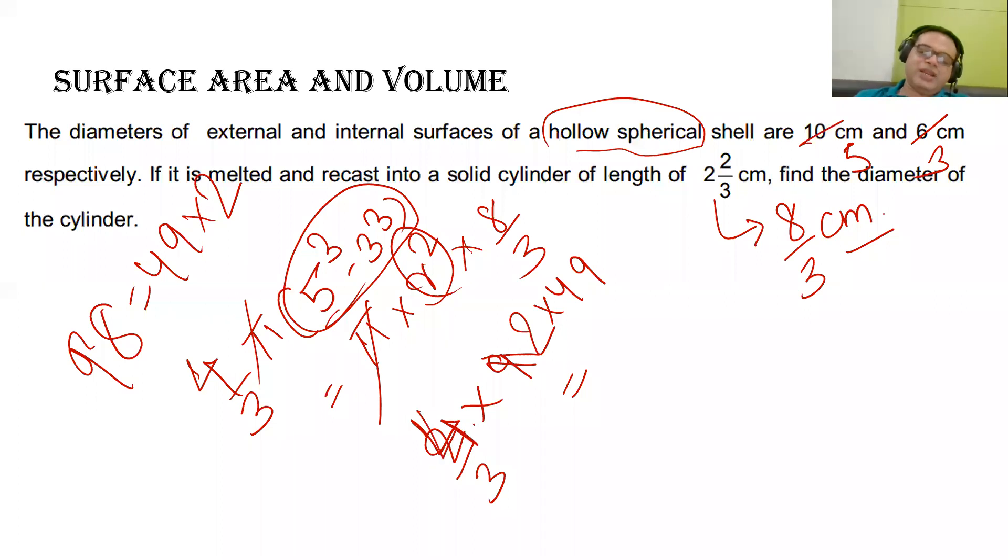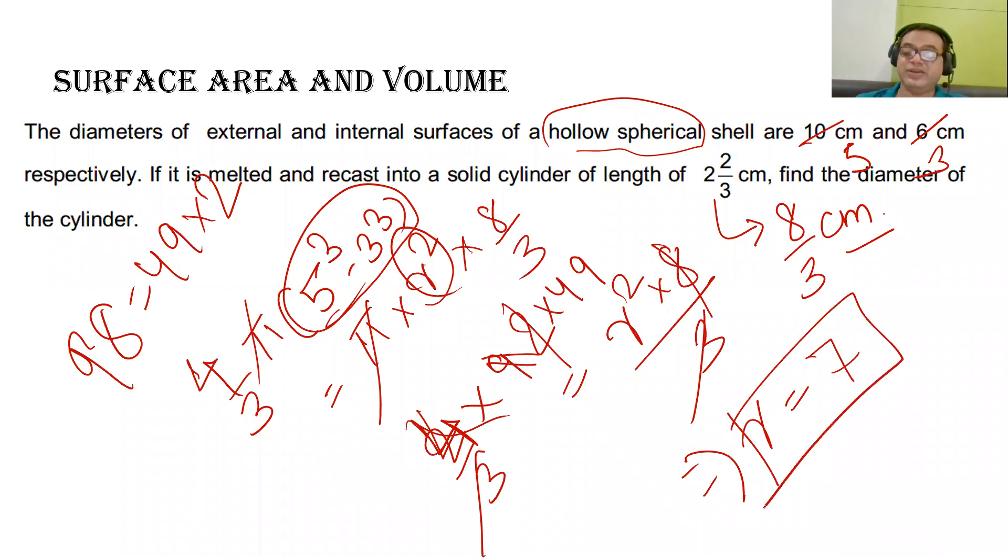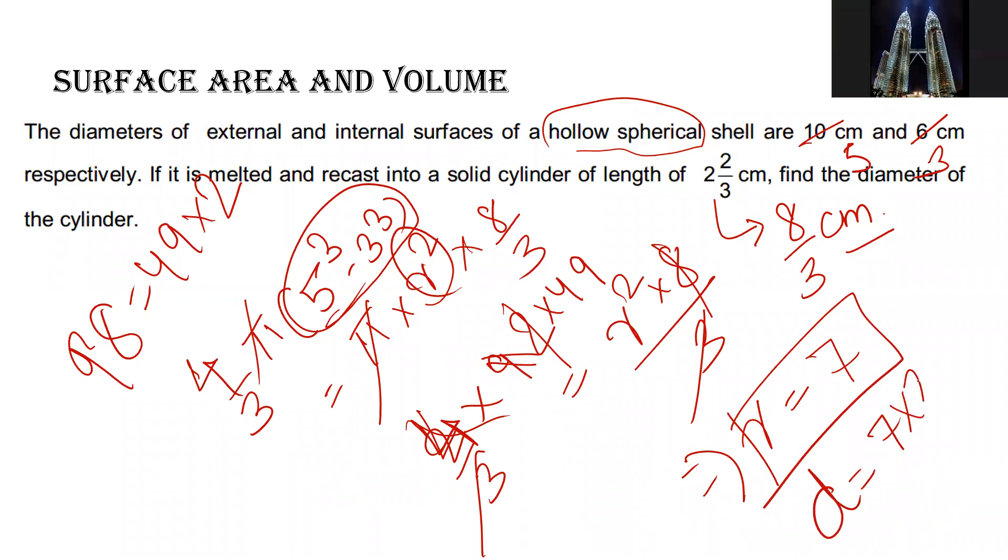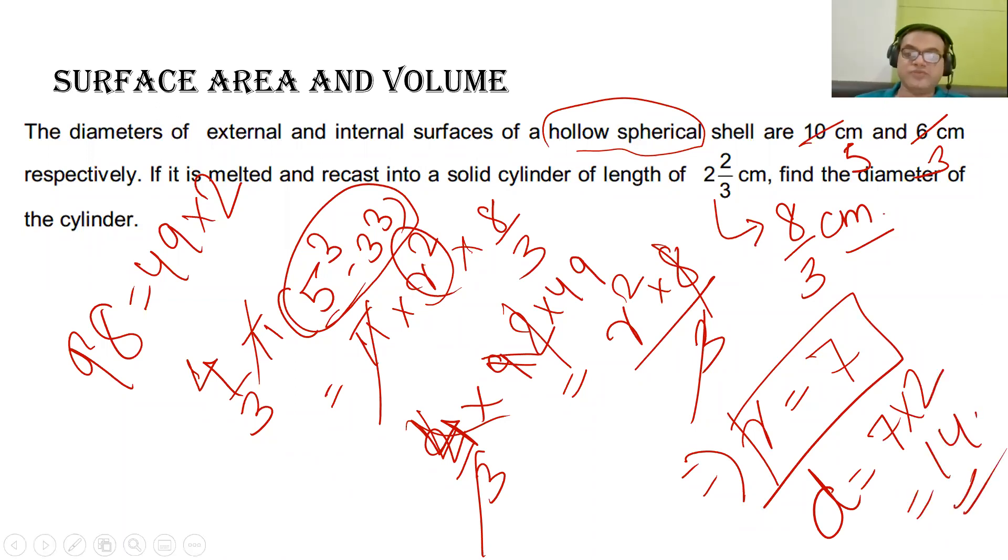So it will be 4 by 3 multiplied by 2 into 49 will be equal to r square into 8 divided by 3. 3 cancel, so finally r is coming out to be 7. Radius 7, so diameter will be 7 into 2 which is equal to 14. So this is how you are required to solve this question.